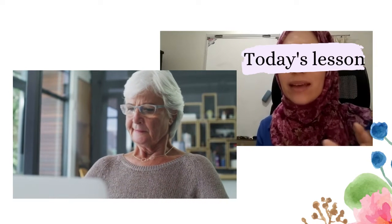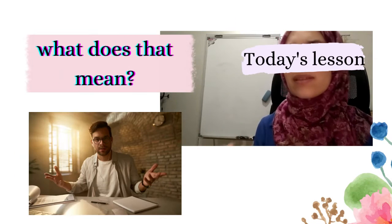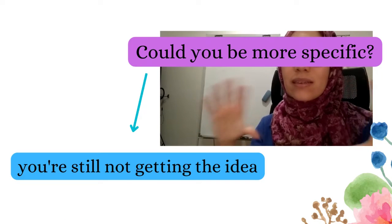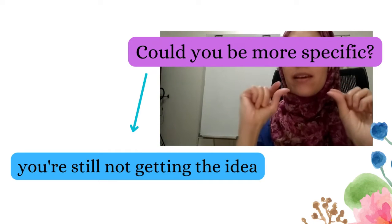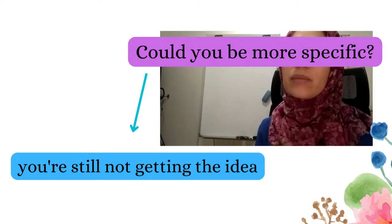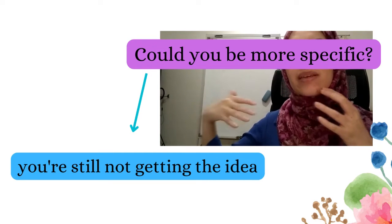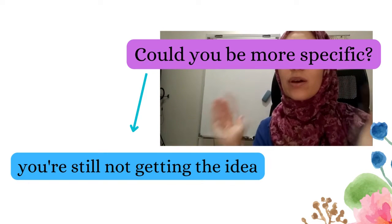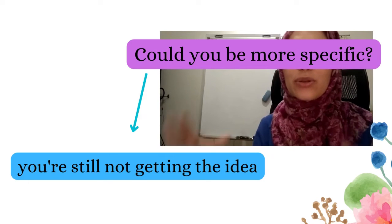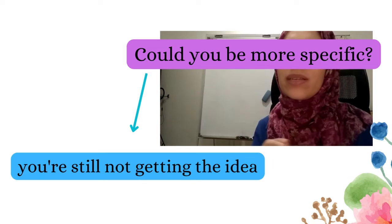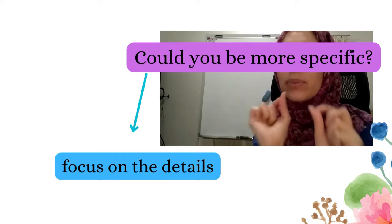You can also ask: 'Could you please be more specific?' This means you are still not getting the overall idea and you want the speaker to specify what they are talking about. Sometimes in a meeting or conversation people speak in a very general way without being specific, which can be distracting. So you say 'Could you please be more specific?' — meaning focus on the details rather than being all over the place.